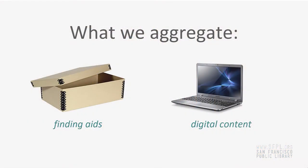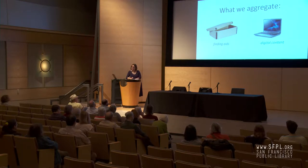As an introduction to those couple of services, we aggregate a couple of different things at the CDL. One thing is finding aids — basically descriptive records for collections. In terms of archives, we're talking about descriptions of things in boxes: how would you find those, how are they organized? These are about physical artifacts in the library. And then the other side is digital content — things that we've scanned in, mainly images, but also audio and video. On the finding aid side, it's for people to figure out how to go and look at things physically, and on the other side, it's how to find things digitally.